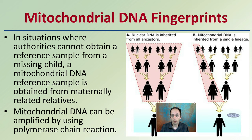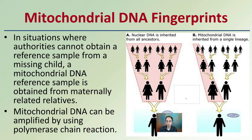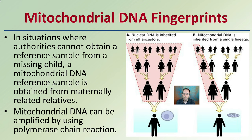There are situations where authorities cannot simply obtain a reference sample from a missing child. A mitochondrial DNA reference sample is obtained from maternally related relatives — remember, only the mom's side. The mitochondrial DNA can be amplified using PCR, a polymerase chain reaction, and what that's going to tell us is an indication of whether there is a possibility of having a match.